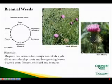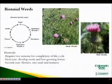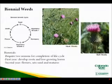Biennial weeds may germinate at any time during the growing season. Examples include bull thistle and musk thistle. They usually produce a radial cluster or rosette of leaves lying close to the soil during the first season. In the second year, they produce flower stalks using food stored from the first season's growth, produce seeds, and die. They are easiest to control in the first year by removing the rosettes.